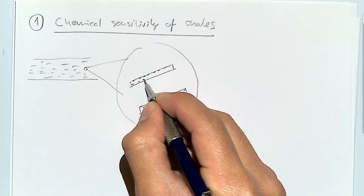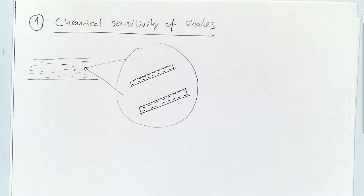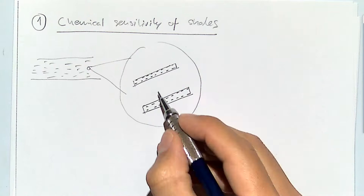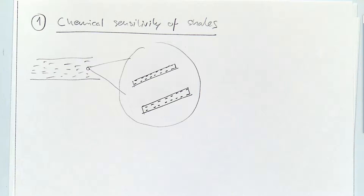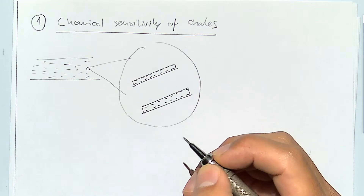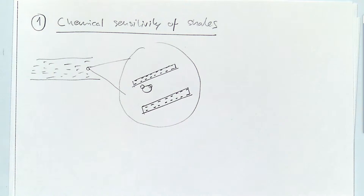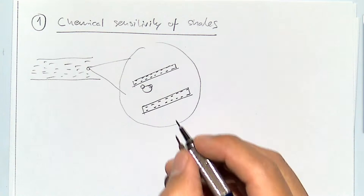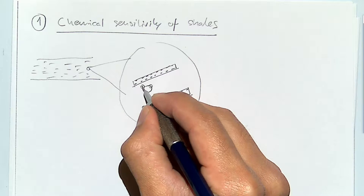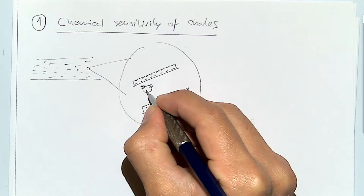Opposite to sand, where you have grain-to-grain contact, in shales and clays the clay plates do not contact each other directly. At this scale, since the plates are so small, molecular forces start to play a role. What keeps the plates apart are molecular forces — in between the plates you're going to have water and ions. Water looks like a Mickey Mouse head where the hydrogens are positively charged and the oxygen in the middle is negatively charged, so the ears point toward the plate.